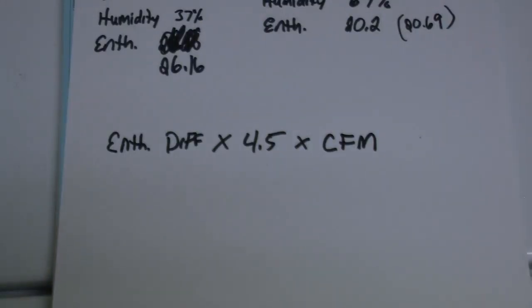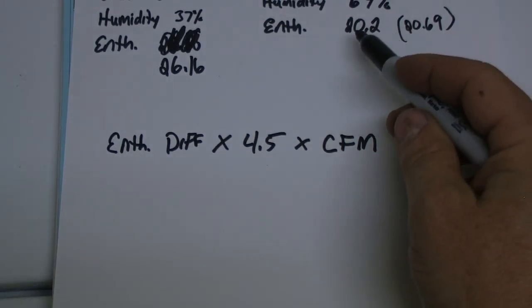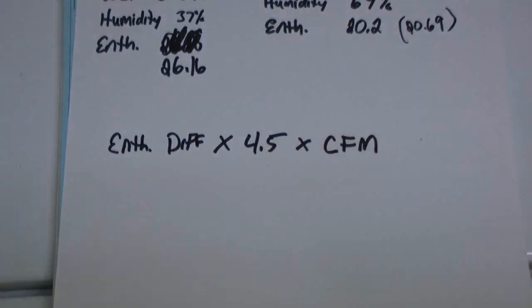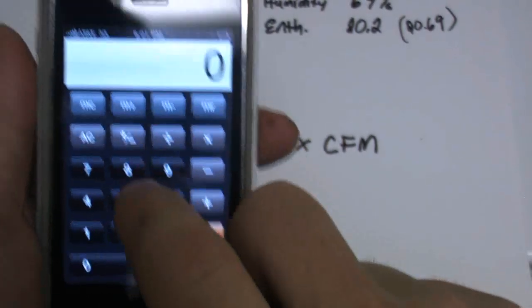So let's figure out how many BTUs we're developing out of here. Let me get my calculator here. Alright, our enthalpy which is 20.6 and 26.16. Let me get my calculator out. So we're going to clear that out.